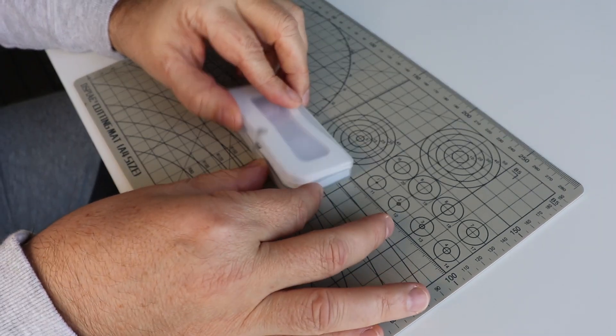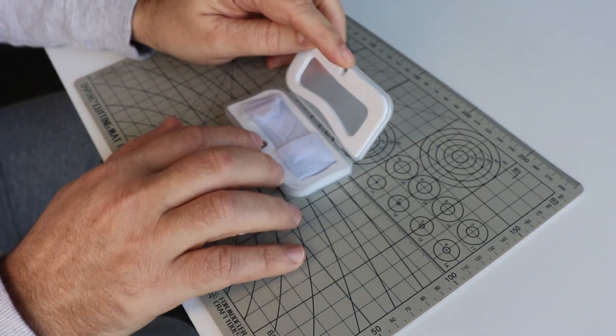The ruler arrives in this nice box and it doesn't have a clip but it's closed with these magnets.